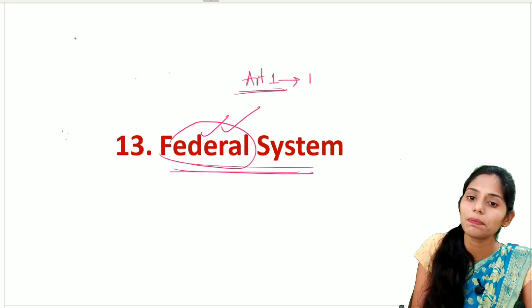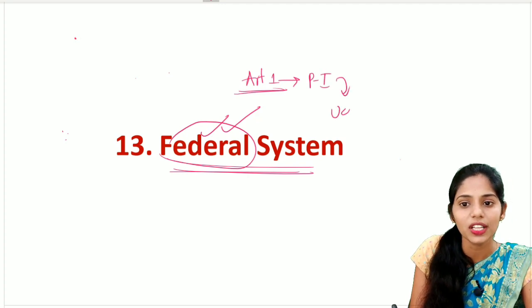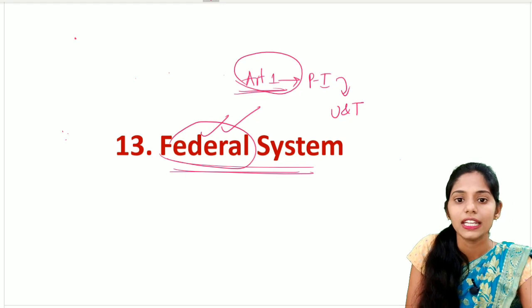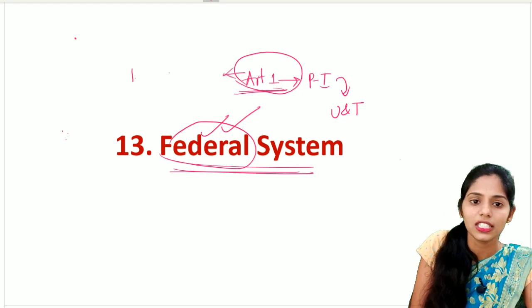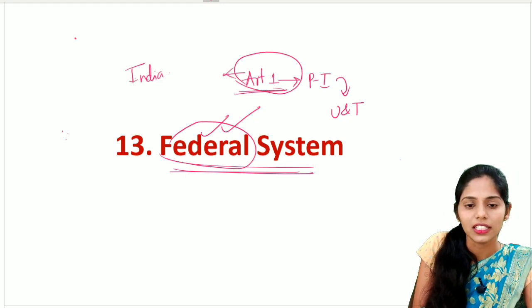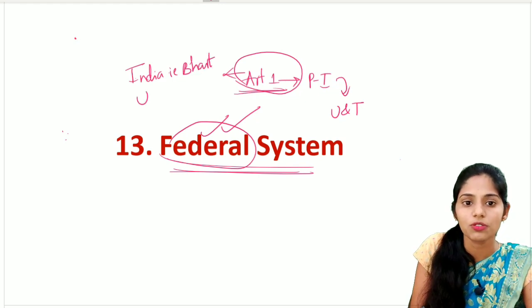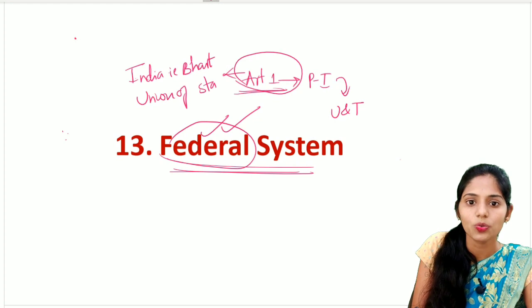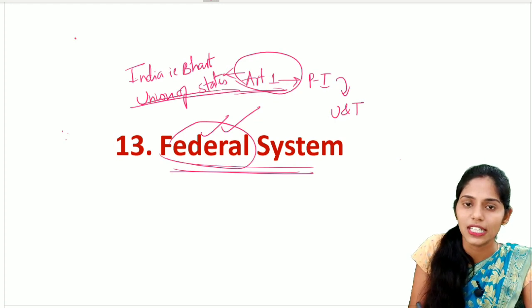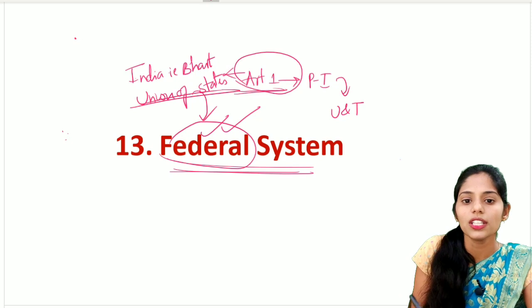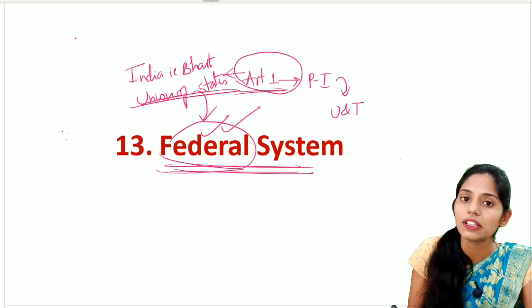If you see Article 1 of the Indian Constitution, which is present in Part 1 dealing with the Union and its territory, the exact wording says 'India, that is Bharat, is a Union of the States.' Whenever it refers to the Union of the States, it is referring to the federal system.